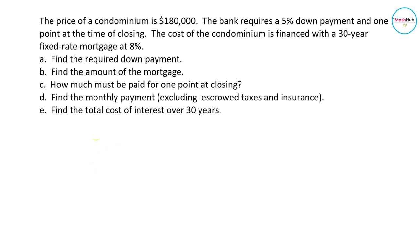To solve for the required down payment, get the price of the condominium and multiply it by 5% because the bank requires 5% down payment. So for letter A, we have 180,000 times 5%. Write 5% in decimal.